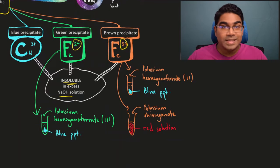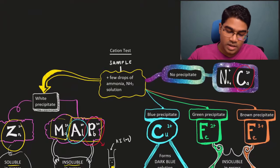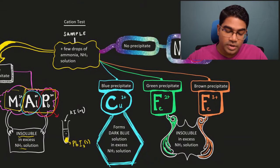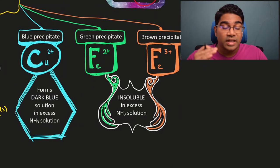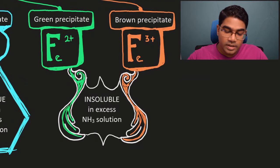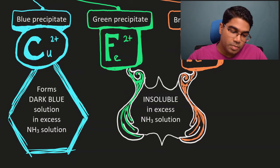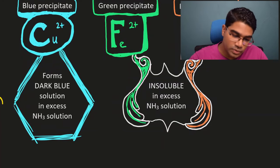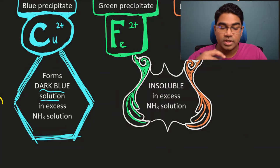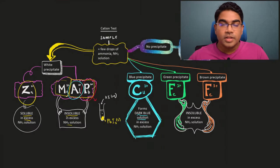These exact coloured precipitates also appear when we use ammonia solution. When you add a few drops of ammonia solution, the coloured precipitates are exactly the same. However they behave slightly differently in excess: the iron(II) and iron(III) ions are still insoluble in excess, just like with excess sodium hydroxide solution. However, copper(II) ions will dissolve in excess ammonia solution to form a dark blue solution, which will confirm the presence of Cu2+ ions.